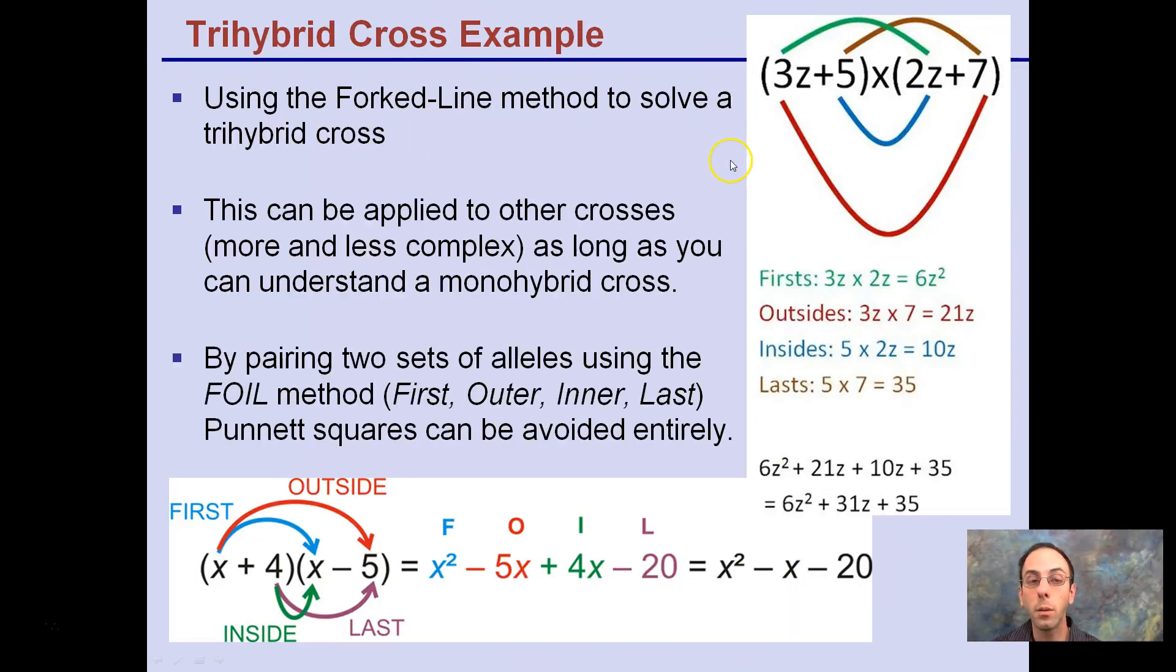So a trihybrid cross example. We're going to use this forked line method and it builds on what we learned with dihybrid crosses. Remember the FOIL method where we're distributing our gametes here? First, outside, inside, and last, and that's how we're going to distribute the gametes. You need to be also familiar with the monohybrid cross because we're going to build upon that with our trihybrid cross.